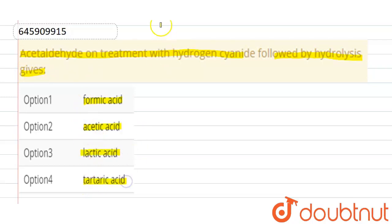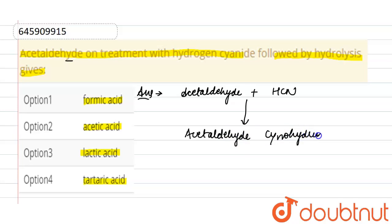Solution of this question: when acetaldehyde is treated with hydrogen cyanide, it will form acetaldehyde cyanohydrin. This cyanohydrin forms by nucleophilic addition reaction.